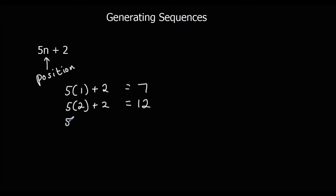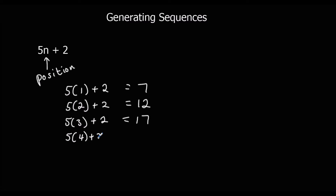The third term is 5 times 3 plus 2. 5 times 3 is 15, plus 2 is 17. The fourth term is 5 times 4 plus 2, that's 22.